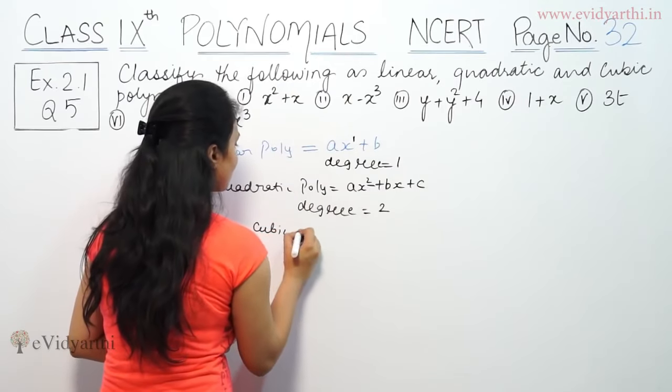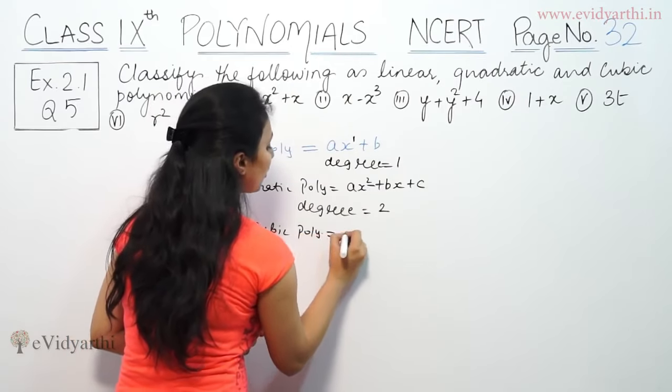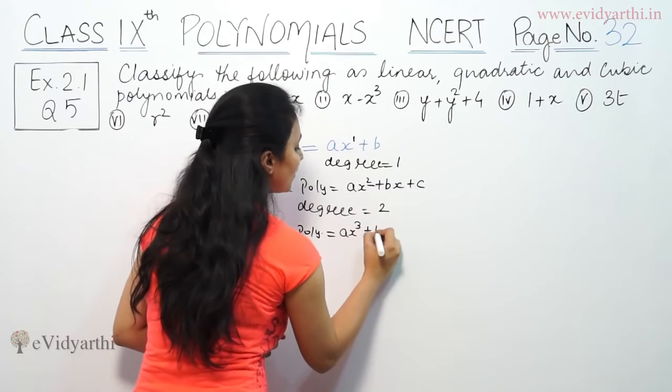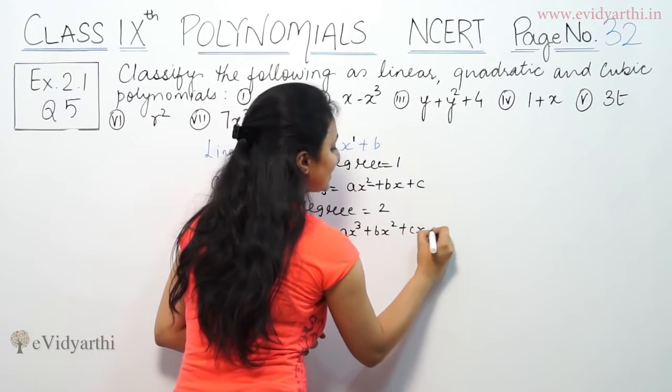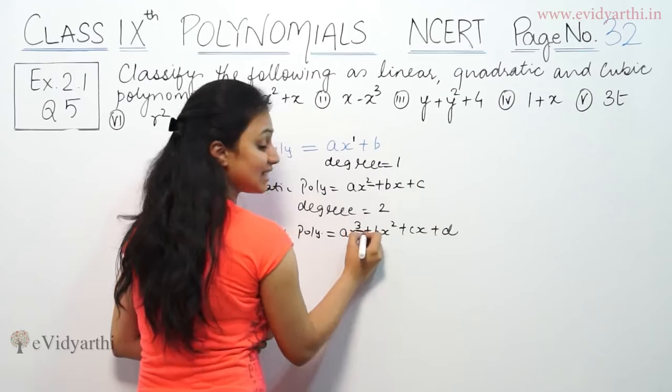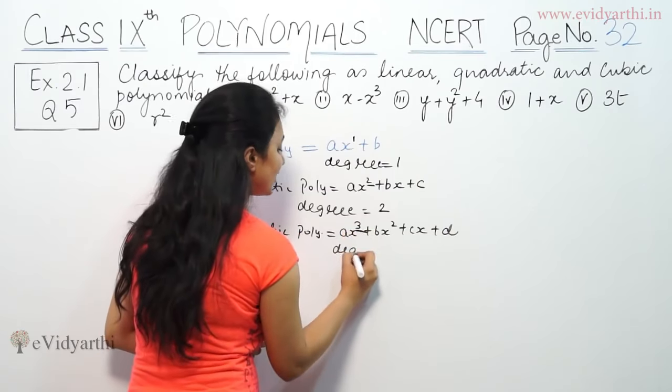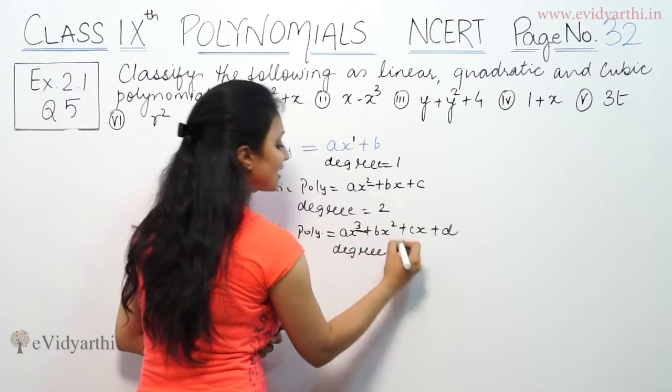Third is cubic polynomials. Cubic polynomials are like ax³ plus bx² plus cx plus d, which has highest power 3. That means degree is 3.